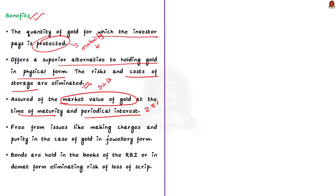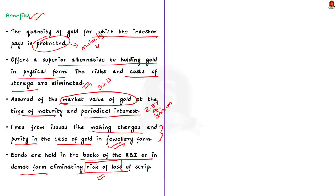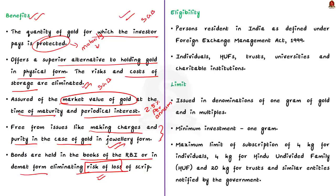Fourth, the Sovereign Gold Bond is free from issues like making charges and purity concerns in the case of gold jewelry, which makes the bonds more attractive to common people. Fifth, the bonds are held in the books of the RBI or in demat form, eliminating the risk of loss. These are the major advantages associated with Sovereign Gold Bonds.